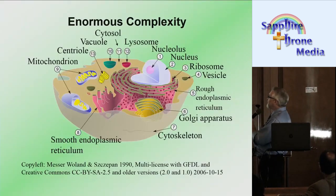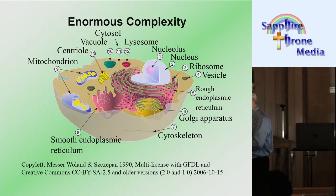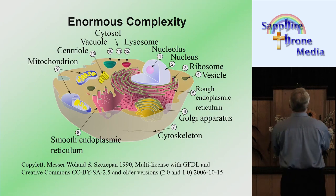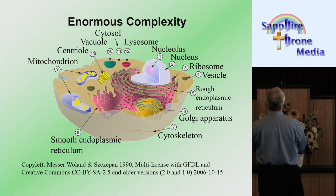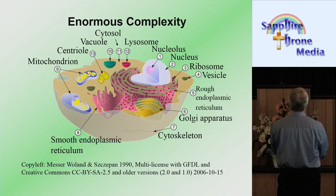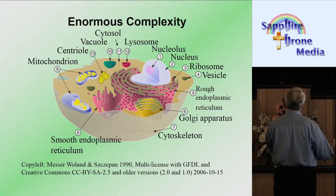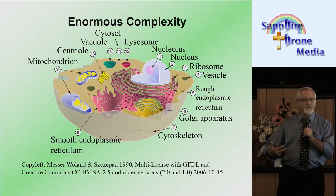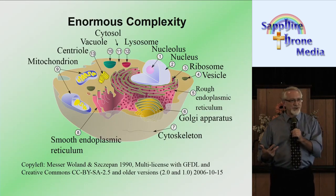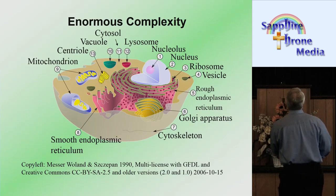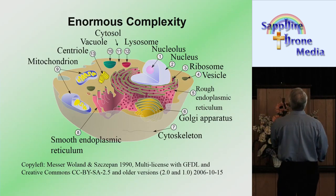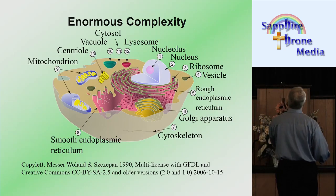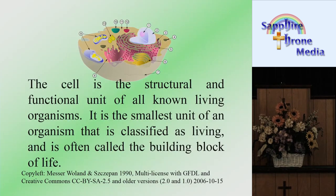There is enormous complexity in a living cell. Starting around the one o'clock position on this picture, we see the nucleolus, then the outer casing — the nucleus — then the ribosome, the vesicle, the rough endoplasmic reticulum, the Golgi apparatus, the cytoskeleton, the smooth endoplasmic reticulum, the mitochondrion, the vacuole, the cytosol, and the lysosome. These are the parts of this enormously complex cell that God has created.